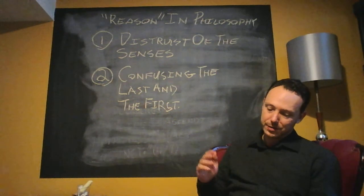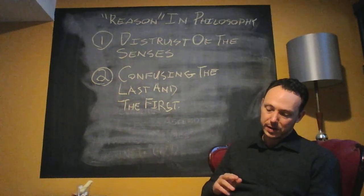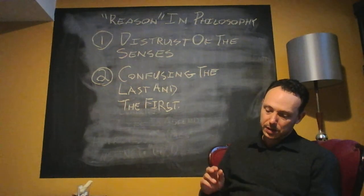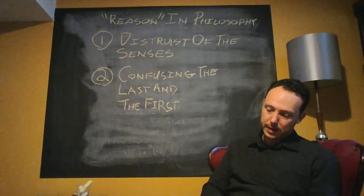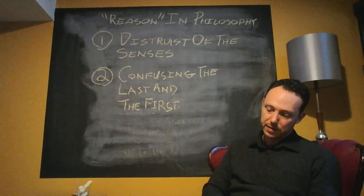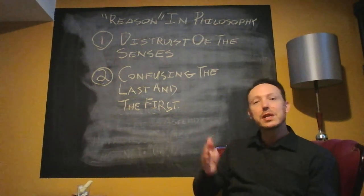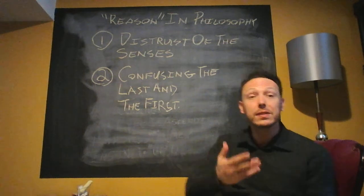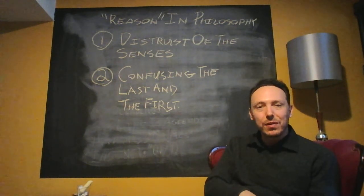Today we possess science precisely to the extent to which we have decided to accept the testimony of the senses, to the extent to which we sharpen them, further arm them, and have learned to think them through. The rest is miscarriage and not yet science, in other words, metaphysics, theology, psychology, epistemology, or formal science, a doctrine of science, such as logic and that applied logic which is called mathematics. In them reality is not encountered at all, not even as a problem, no more than the question of the value of such a sign convention of logic.